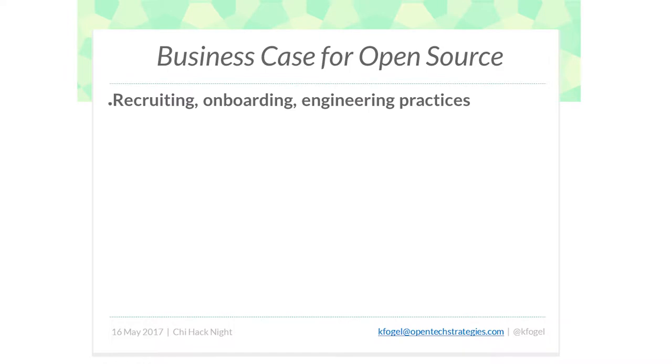From a business's point of view, why do they do open source? For one thing, it helps with recruiting and onboarding. Someone comes in already knowing how to use git, accustomed to a certain style of development. Also, you find people — your employees were out there in an open source project, they met this person, you've already seen their resume in a sense because you worked with them directly. A lot of people get hired through their work in open source.